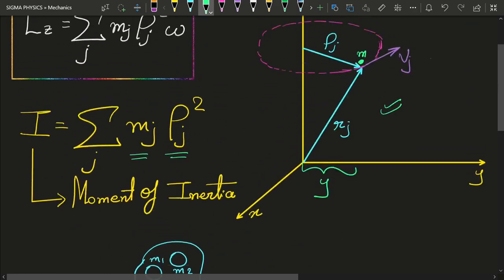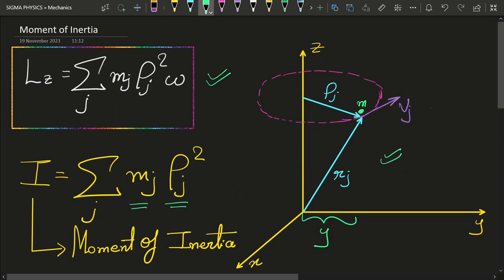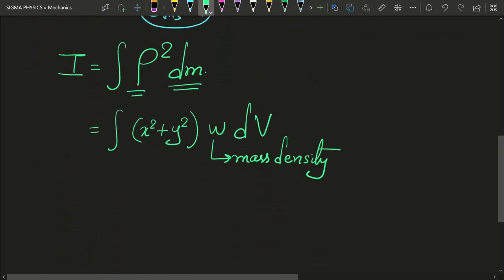Hence, if we define the moment of inertia in this manner, then we can now write angular momentum using this expression as L equal to I omega.